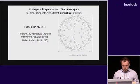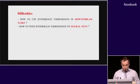This is a hot topic in machine learning since the work of Nickel and Kiela on Poincaré embeddings. There remain a few difficulties in order to properly use this non-Euclidean geometry. The first question is how to use hyperbolic embeddings in downstream tasks, and more specifically how to feed hyperbolic embeddings in neural networks.